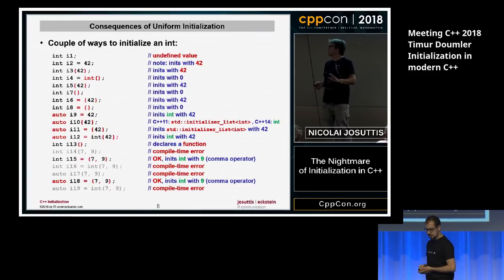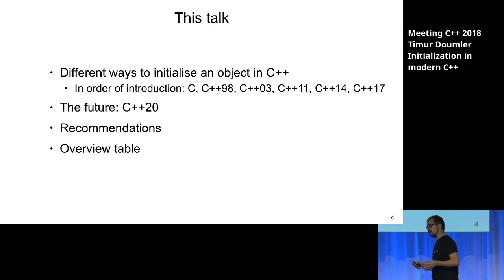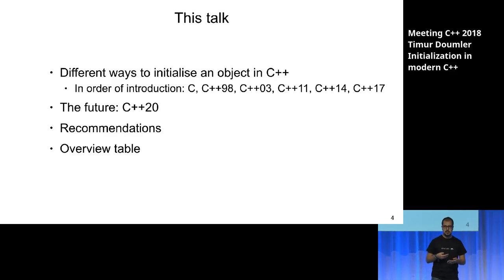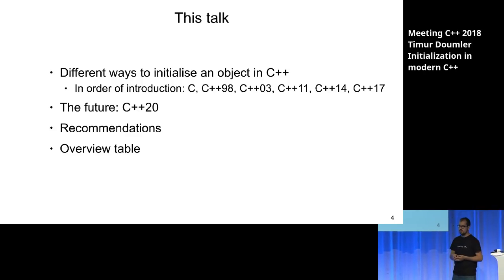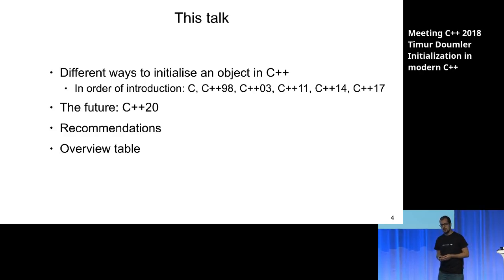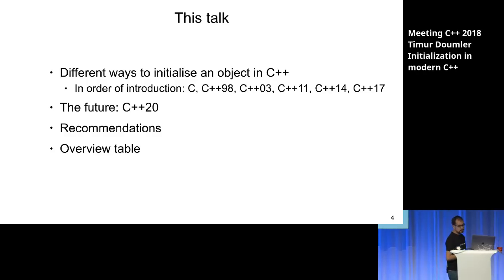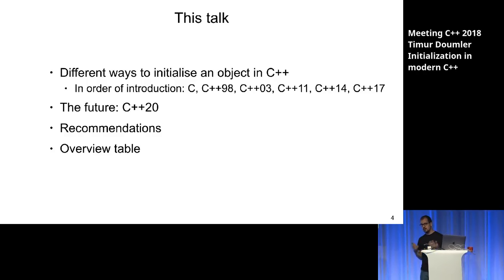I came up with this structure where I'll introduce the different ways you can initialize things in C++ in chronological order — starting with things we inherited from C, then what was introduced when C++ was created, then additions in later versions of the standard. I'll also talk about C++20 and the changes we'll probably see there. Then there'll be some recommendations about what kinds of initialization to use in your code, and an overview table at the end.